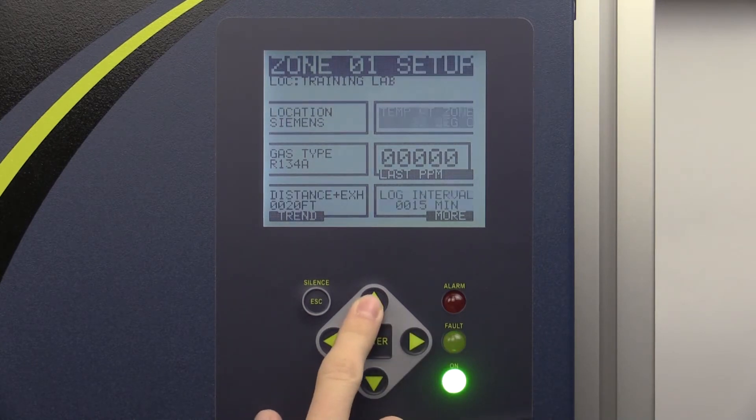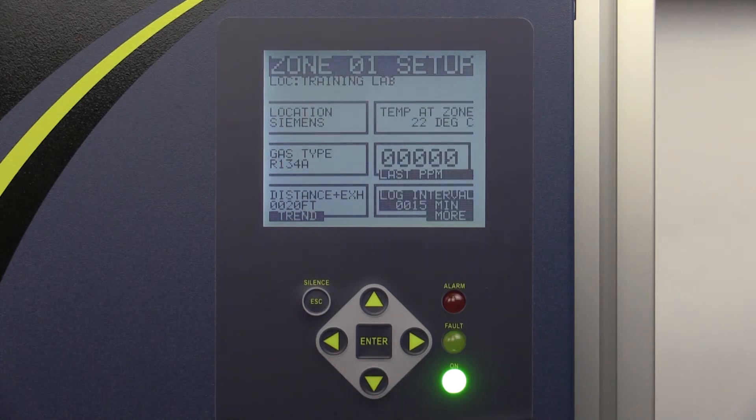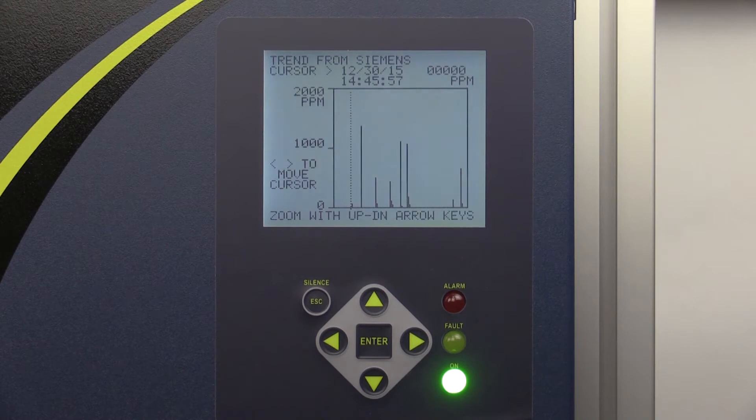Measure the air temperature in degrees Celsius at the specified zone and enter this value into the Temperature at Zone tab. The Last PPM tab displays the most recent PPM reading that was taken for that zone. The Log Interval tab allows you to set how often a PPM reading will be entered in the data log for that zone. The highest PPM reading during an interval will be entered into the log. The Log Trend graph can be accessed by scrolling down to the Trend tab and pressing Enter. The graph displays the last 100 logged PPM readings for that zone.